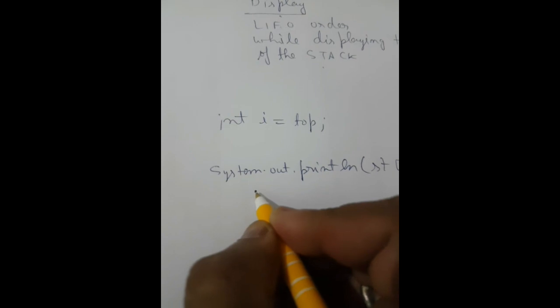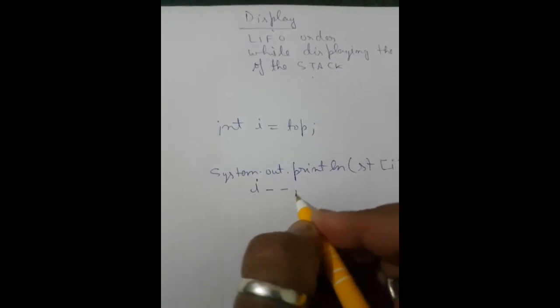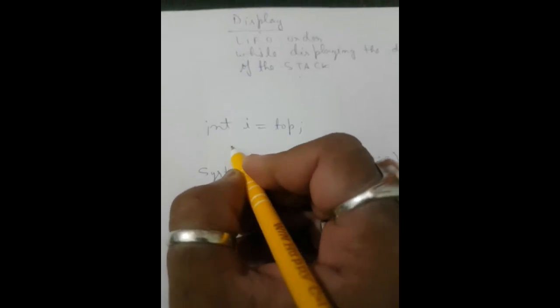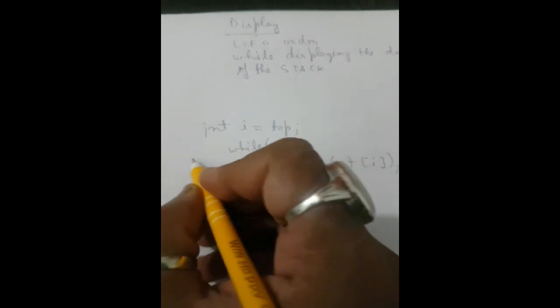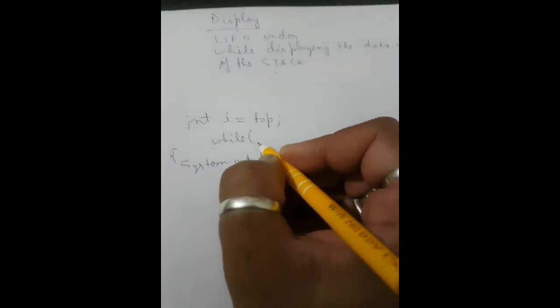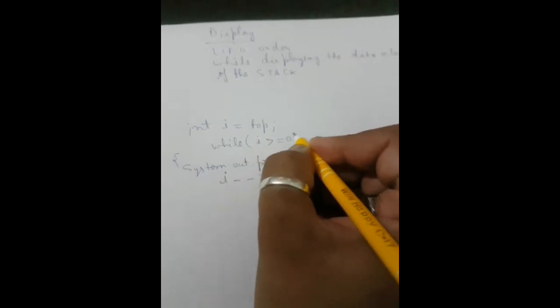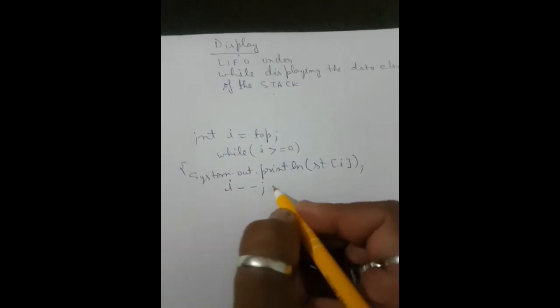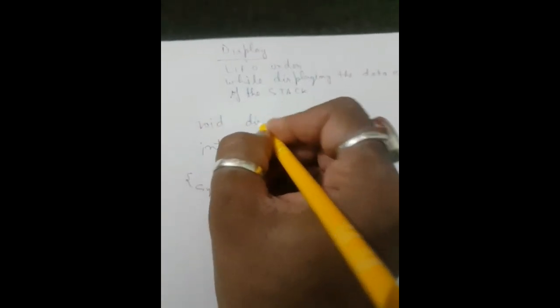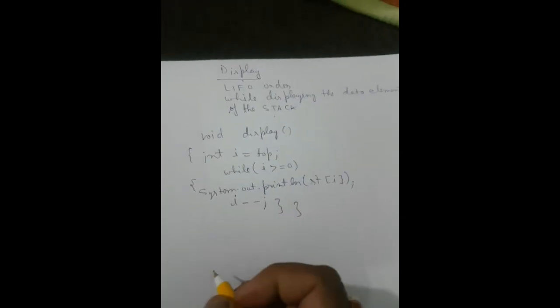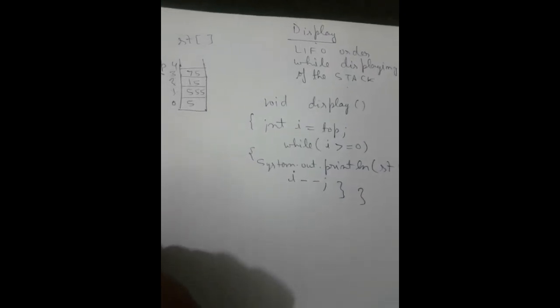After printing st[i], we decrement i by one — i-- — moving from top toward index 0. The loop condition is i >= 0, since we are traversing in reverse order. These steps are placed inside a void display() function. This completes all four operations of the stack: push, pop, peek, and display.